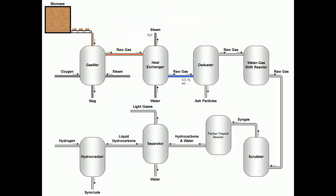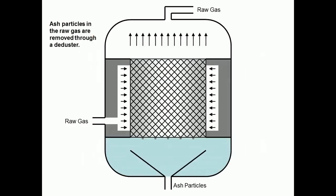In the third step, raw gas is sent into a de-duster. Ash particles suspended in the raw gas are removed through the de-duster.